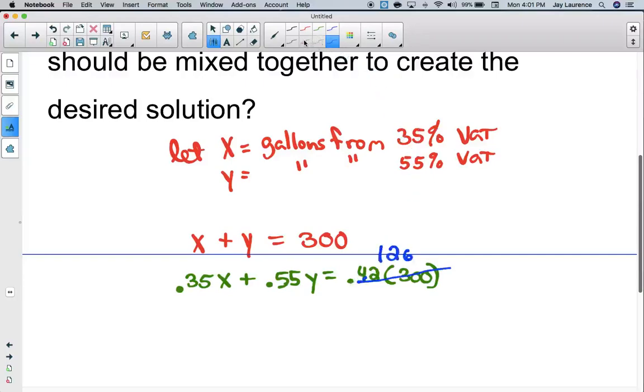This looks like a great substitution problem. I'll solve for X. So X is going to equal 300 minus Y. Now it's time to substitute. I'm going to take 35% and multiply it by 300 minus Y, substituting it in. Then I add the 0.55Y, and that should equal 126.